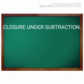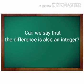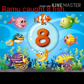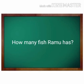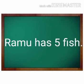Closure under subtraction. What happens when we subtract an integer from another integer? Can we say that the difference is also an integer? Let us see. Ramo caught eight fish in a lake. He gave three fish to his friend Kittu. Then how many fish does Ramo have? 8 minus 3 is equal to 5. Ramo has five fish.